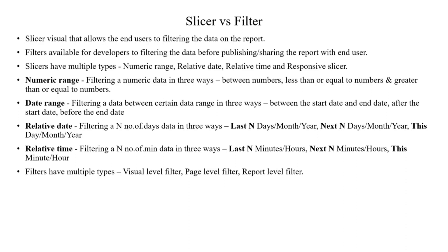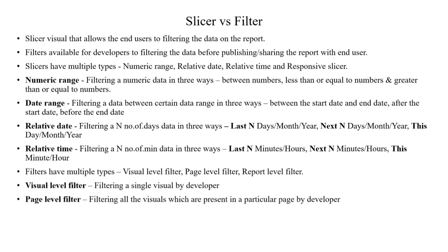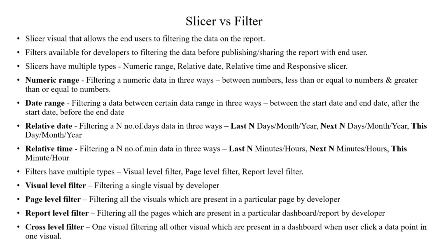For the report level filter, there are multiple pages — 4 pages or 5 pages — and all pages share this particular filter. We can filter the data at the report level. If you add the cross level filter, clicking on a visual level filter allows you to filter the data point in a category.